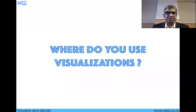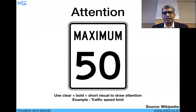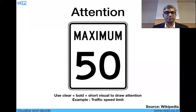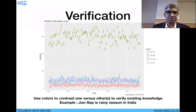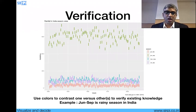Where do you use visualizations? If you're traveling, you only have a quick ten-second window to capture the rider's attention — so a quick '50 km/h speed limit' sign, clear and bold, draws attention for verification. And this is the case where the monsoon season, June to September, shows rainfall on the Y-axis much higher compared to all other seasons. This is a chart I plotted using R programming.